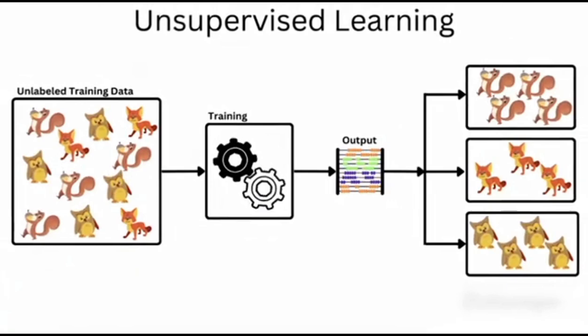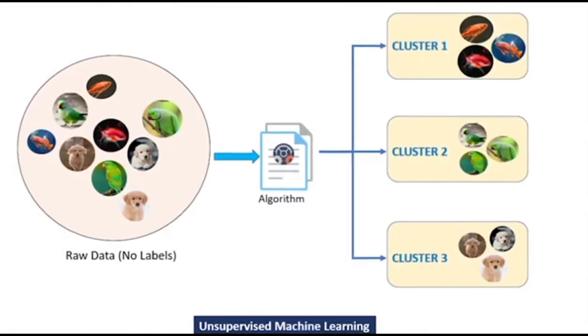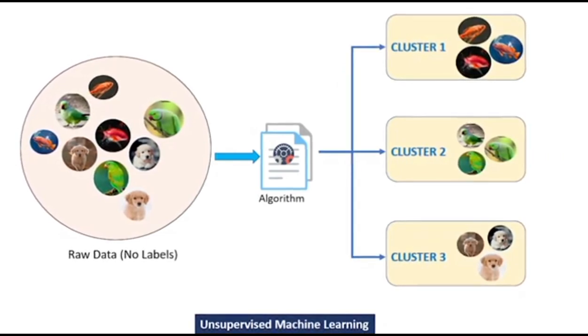Unsupervised learning is the toughest or most complex algorithm. It is useful for image classification and data clustering.